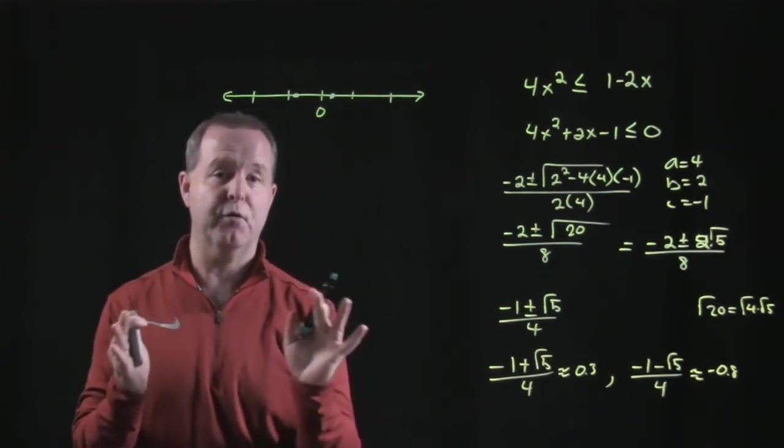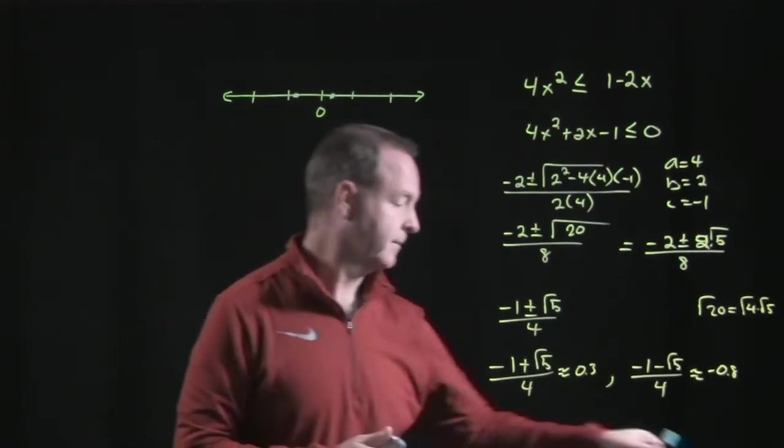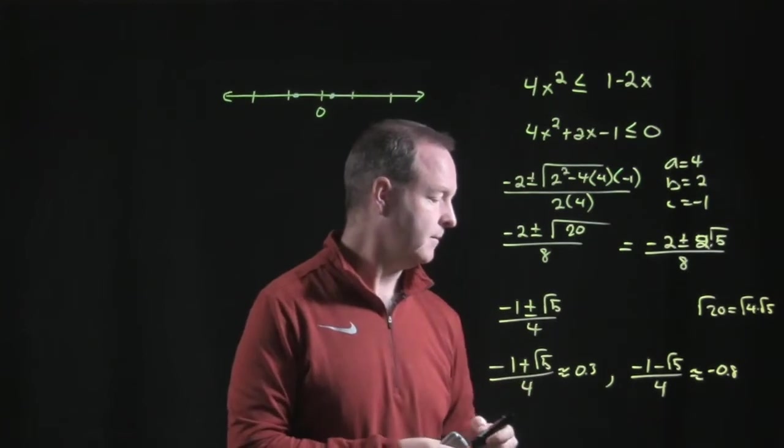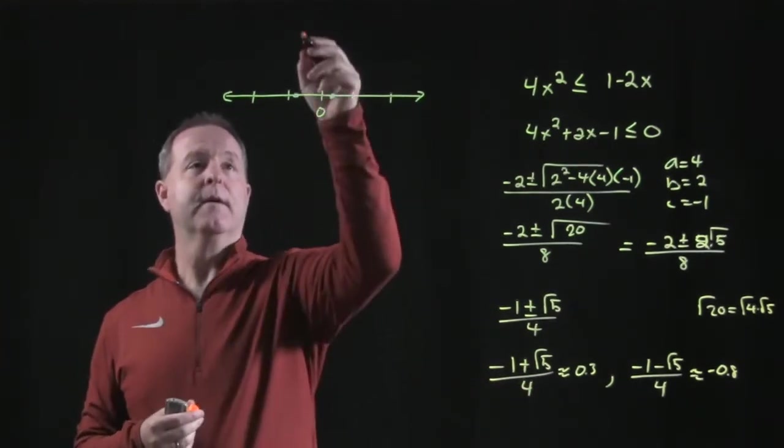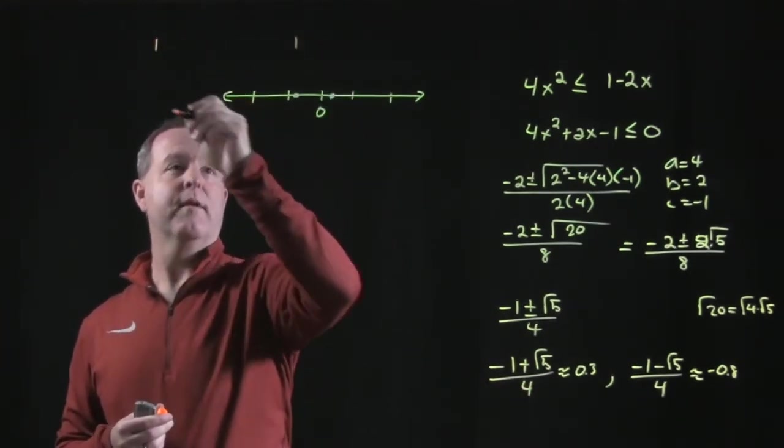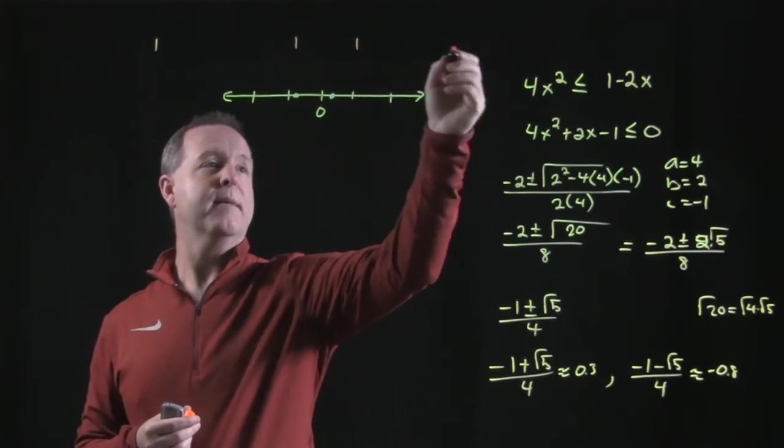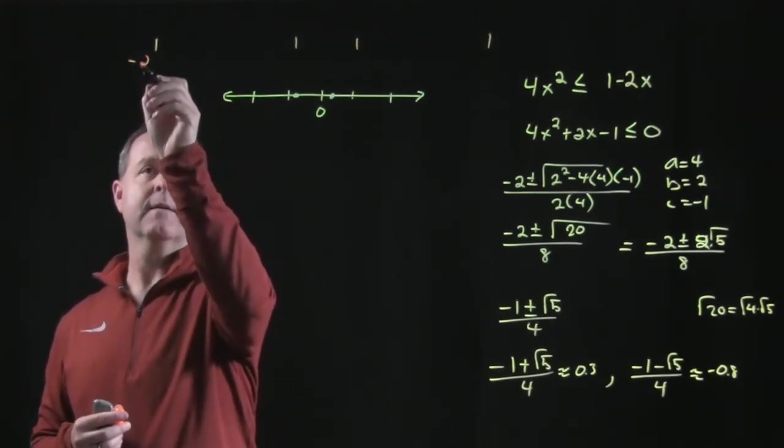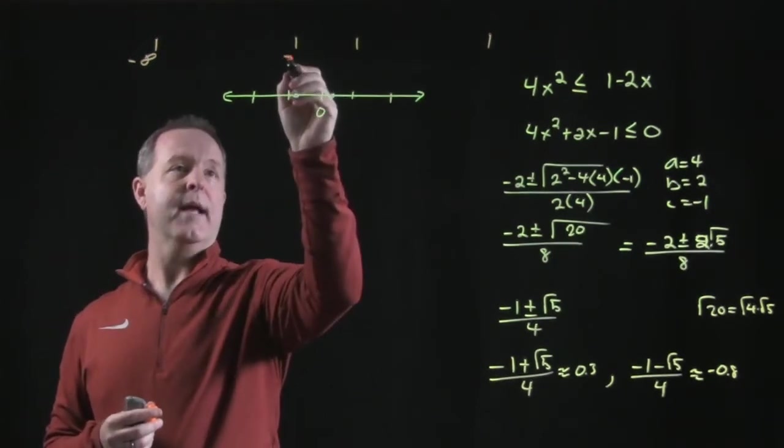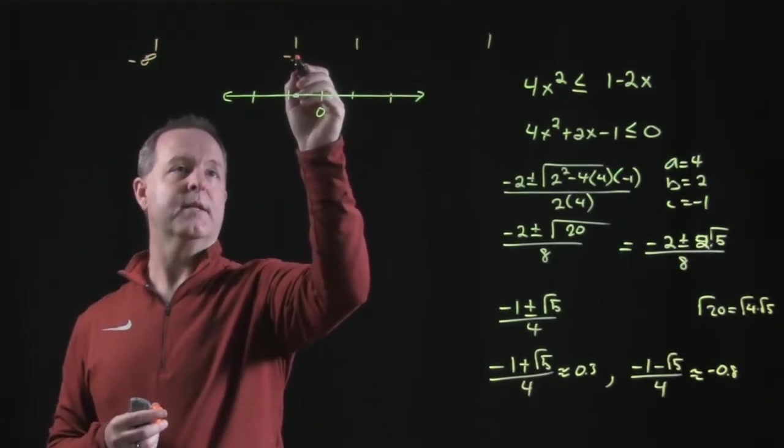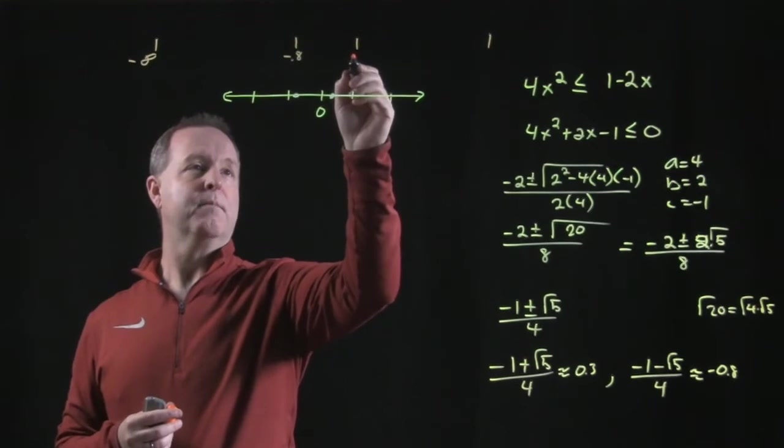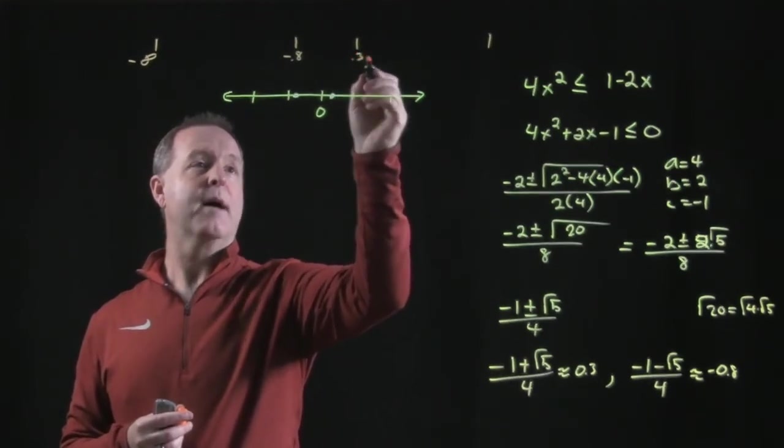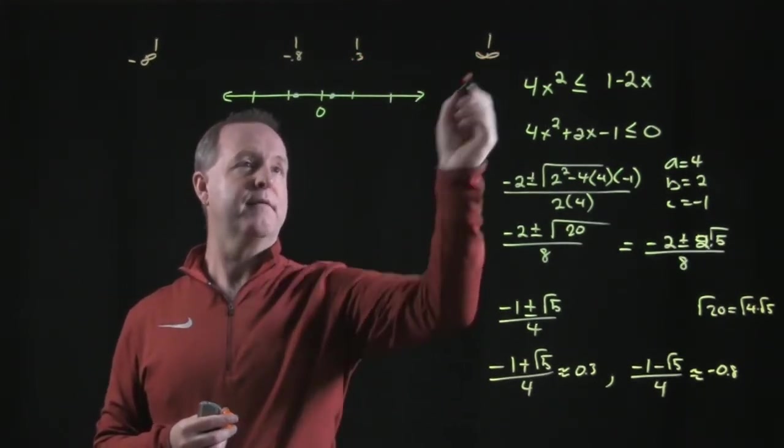What I hope you see is I have three sections to check. I have three segments: this segment over there, this segment here in the middle, and this segment all the way out there. From negative infinity to negative 0.8, to positive 0.3, to positive infinity.